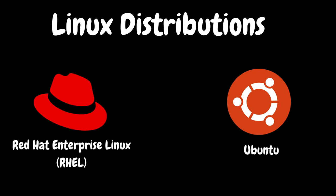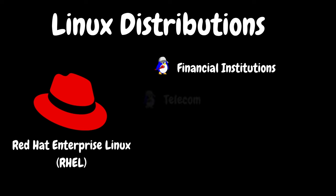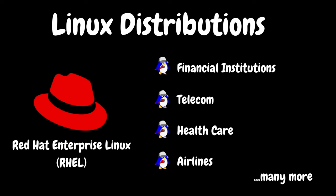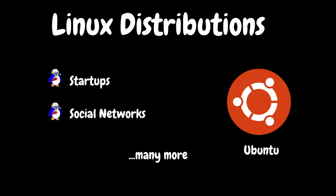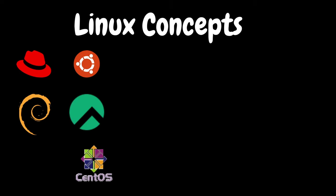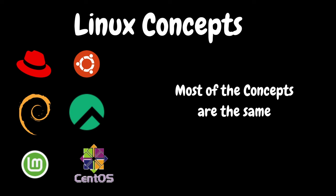These days, most IT organizations will use Red Hat Enterprise Linux, also called RHEL, and Ubuntu distributions in their environments. RHEL is popular in financial institutions like banks, telecom industry, healthcare industry, airline industries, and many more. Similarly, Ubuntu is popular in startups, social networks, and many more. In general, whoever wants to pursue a career in Linux will learn Ubuntu distribution first. Most Linux concepts are pretty much the same across distributions; however, each distribution is slightly different. It is recommended to focus on commonly used distributions in IT organizations like RHEL and Ubuntu, instead of hundreds of other distributions.